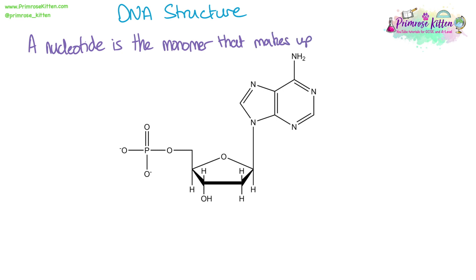DNA, or nucleic acids including DNA, are polymers. They're made up of monomers which are called nucleotides. Both RNA and DNA are examples of nucleic acids and they are both polymers.